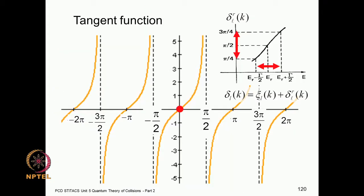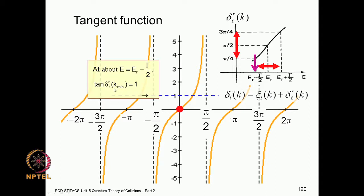Now let us study the tangent function. This is the usual tangent: the x-axis is the angle, the y-axis is the tangent. Zeros occur at 0, pi, 2pi, etc., with asymptotes at pi/2, 3pi/2, etc. We found that at E_r − Gamma/2, the tangent of the phase shift equals +1, corresponding to a horizontal blue line. This is the onset of the significant part of the resonance where the phase shift changes rapidly through pi/2.